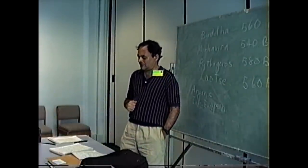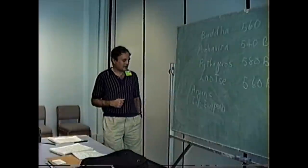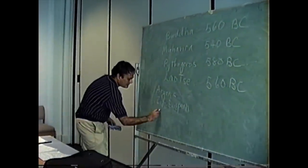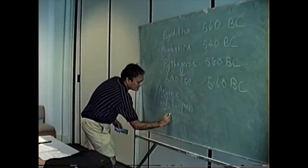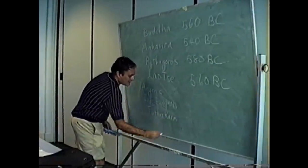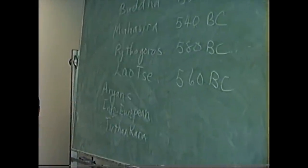Mahavira is called the 24th Tirthankara. Tirthankara is translated loosely as Ford maker.